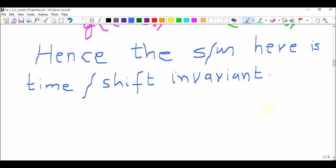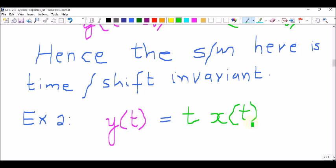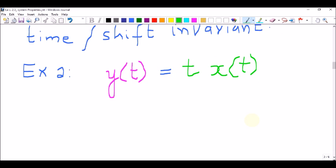Let us pick the second example now. In this example, the output y(t) is the scaled version of the input, which is t times x(t). Let us apply the shift of the input x(t - t0).